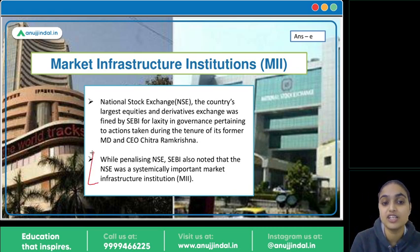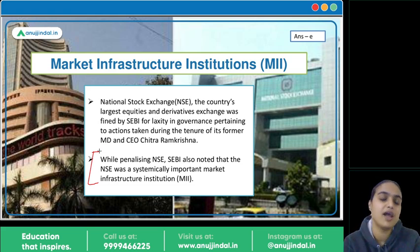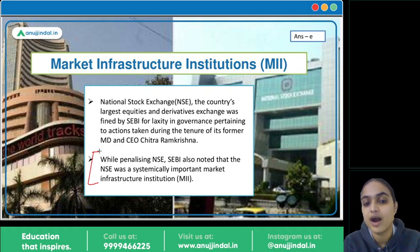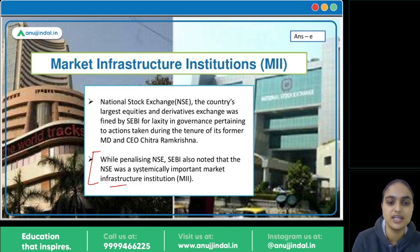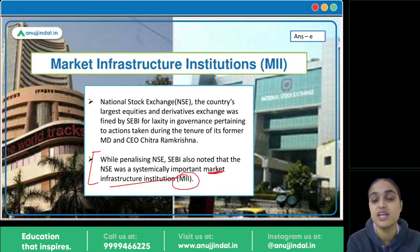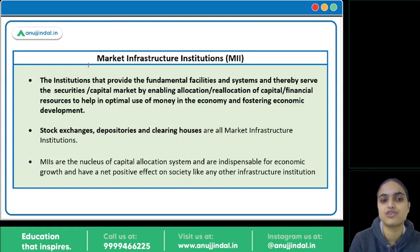The SEBI order had penalties imposed on the wrongdoers — although it was not considered a satisfactory decision since they had not yet identified the identity of the Himalayan yogi and related aspects. But still, an order came. In that order, one key thing mentioned was that NSE is a Systemically Important Market Infrastructure Institution. MII stands for Market Infrastructure Institution.